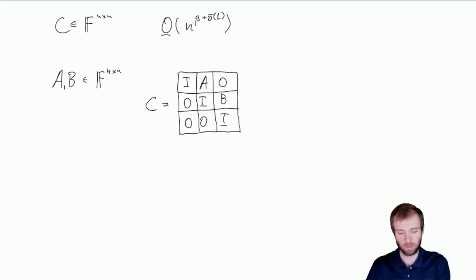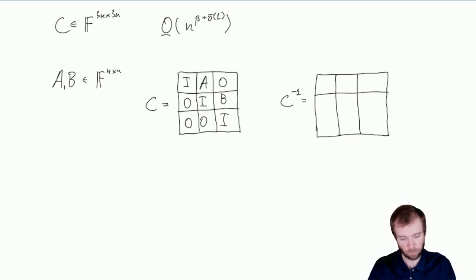But if we are able to invert matrices of order n, then changing C to 3n by 3n matrix does not really change the asymptotic behavior of this function. And let's now observe that C inverse actually is equal to a block matrix where the blocks look as follows. Here we have all 0s, here we have all 1s that are identity matrices, and here we have minus A and minus B. And we have a product of A and B in the top right corner.